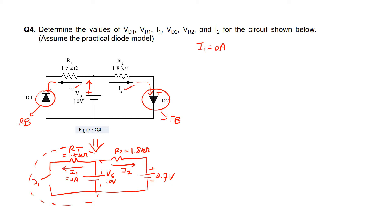Since I1 is equal to 0 amps, we can calculate the voltage across the resistor R1, or VR1. VR1 will be equal to the current I1 times the resistance of R1. Since I1 is equal to 0 amps, anything multiplied by 0 will be equal to 0 as well, so therefore VR1 will have a voltage of 0 volts.